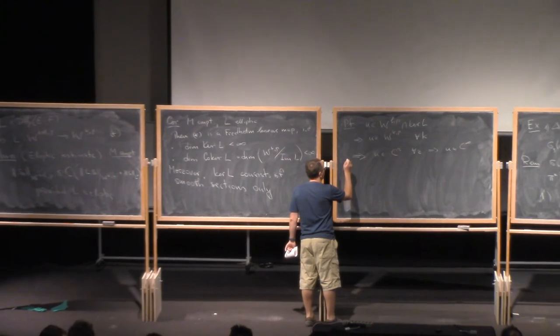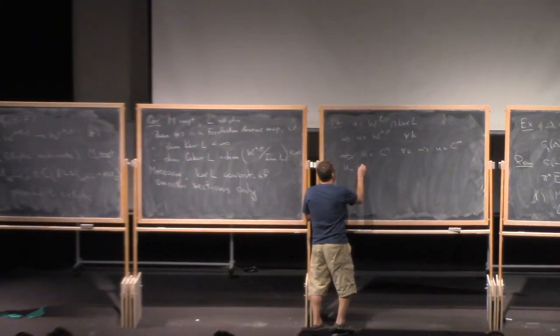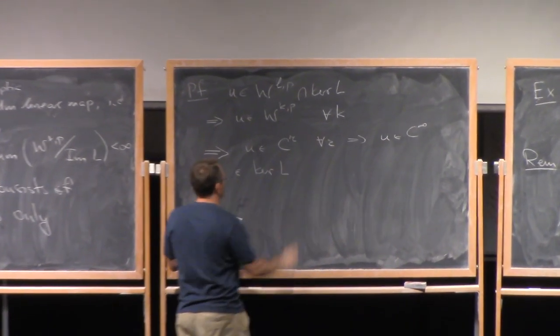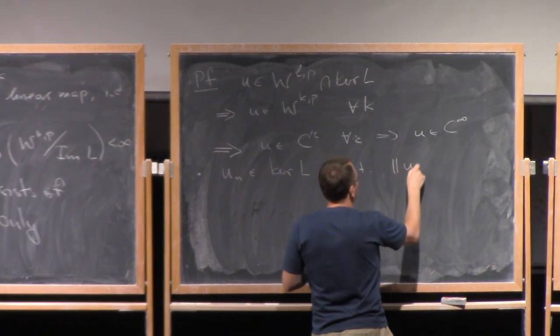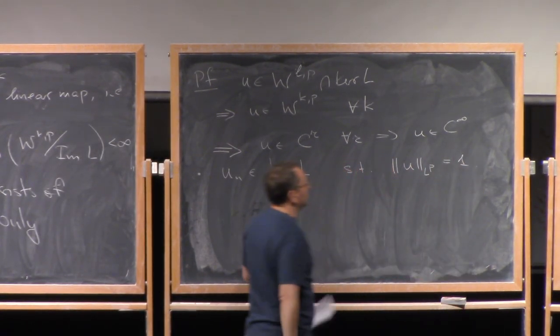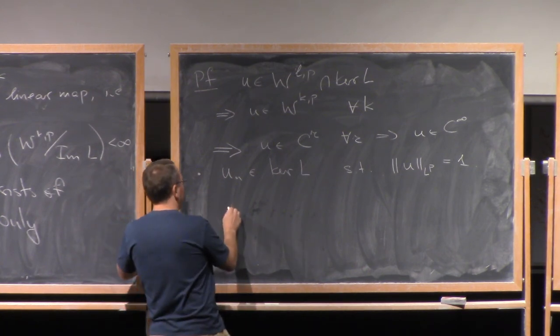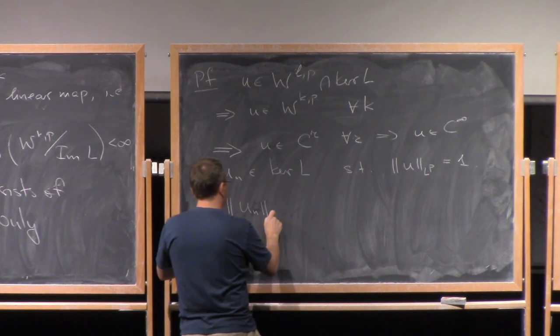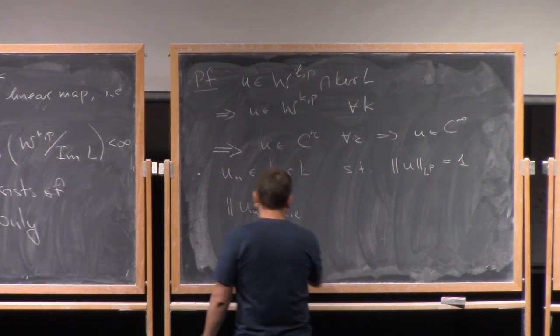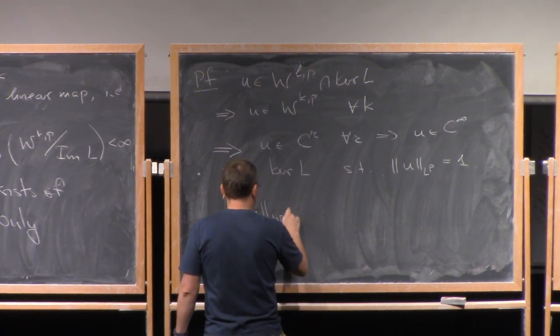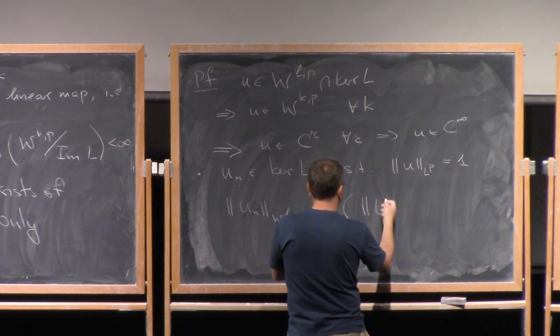So this proves the regularity part, so let me prove that the dimension of the kernel is finite. So what we do is, we take any sequence u_n in the kernel of L, and we can normalize the sequence such that the norm of U in L^p is 1. Now by the elliptic estimate, what we have is that the norm of U_n in W^{L,p} is smaller or equal than C norm L(u).